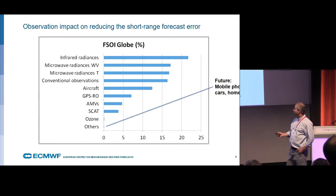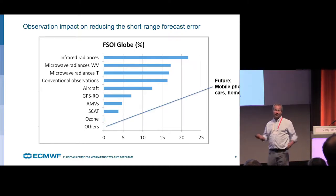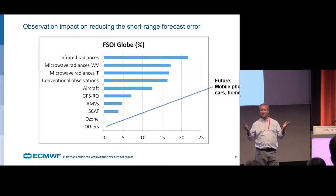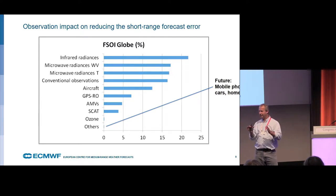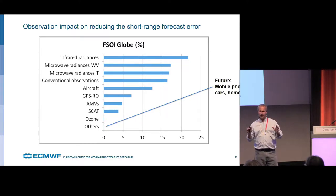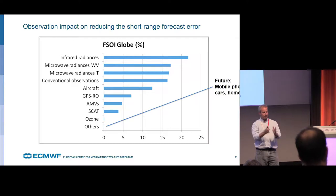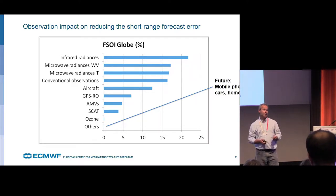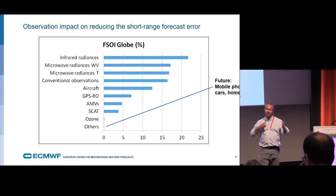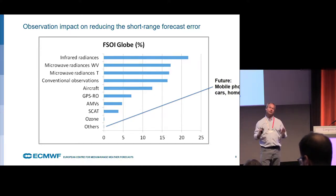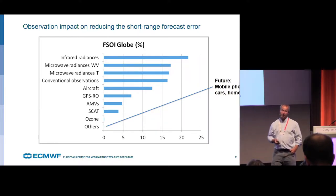New observation sources are coming: GPS radio occultation has quality similar to temperature observations from balloon measurements. In the future, mobile phones, cars, homes — the Internet of Things — will all provide information. There is open research into how to bring this into global weather simulations and assimilate it despite huge errors. The hope is that errors could be reduced by sheer number of observations, but it is a big challenge in terms of storage formats and data ingestion — totally open at this point.